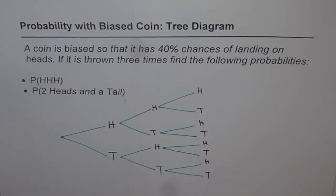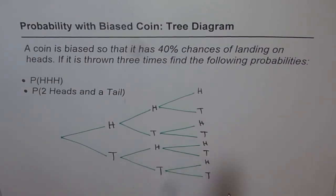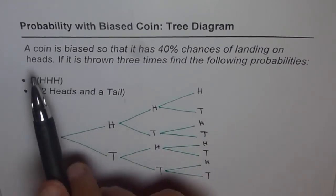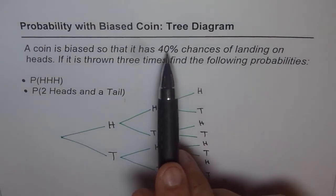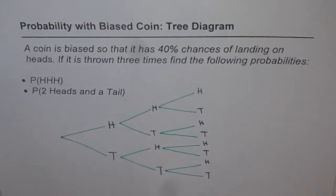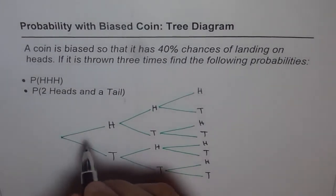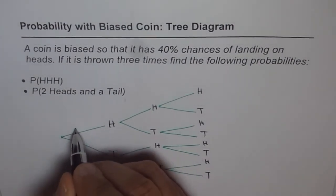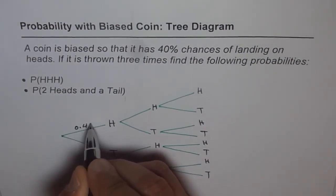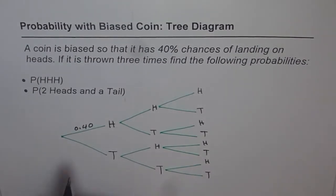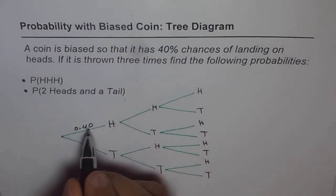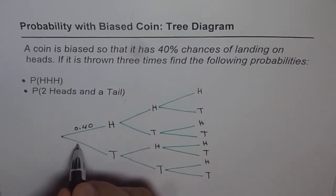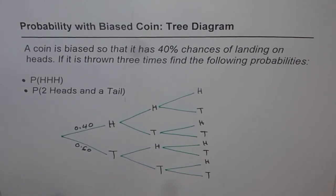When we say probability tree diagram, we fill in the probabilities. The coin is biased — it has 40% chances of landing on heads. So for heads it is 0.40. That means for tails it should be 100% minus 40% = 60%, so it is 0.60.